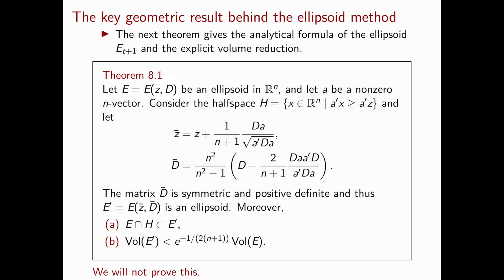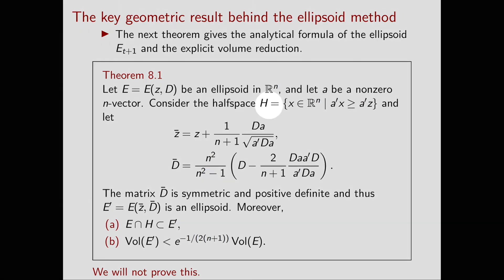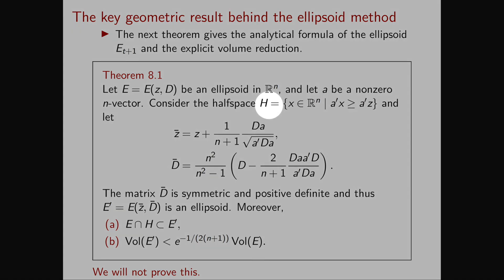Let's read through theorem 8.1. Let E(z,D) be an ellipsoid in R^n and let a be a non-zero n-vector. Consider the half space H of the vectors x in R^n that satisfy a transpose x greater than or equal to a transpose z.